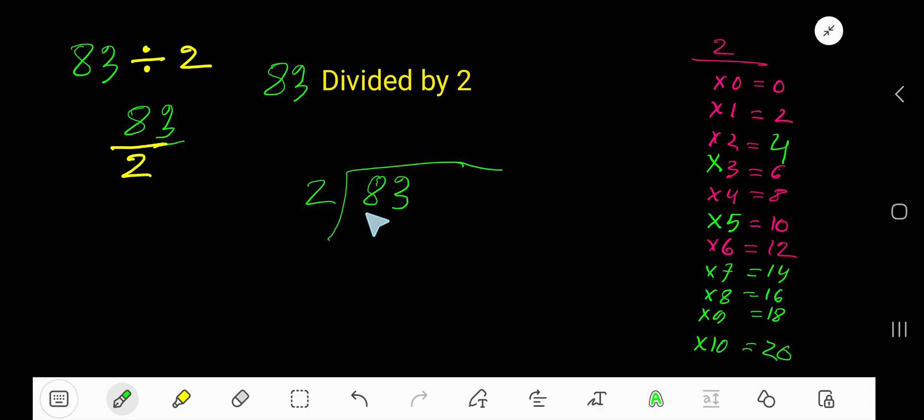So 2 goes into 8 how many times? 4 times. Write 4. 4 times 2 is 8, subtract to get 0. Bring down this 3.